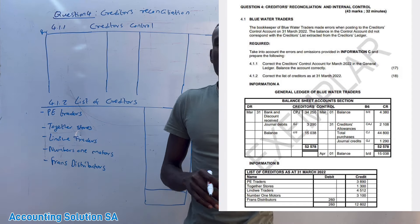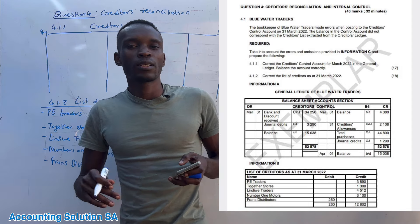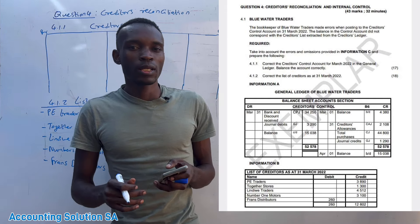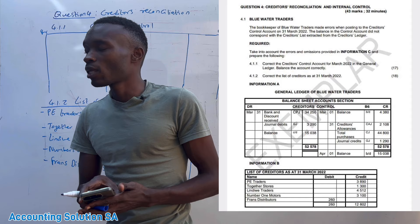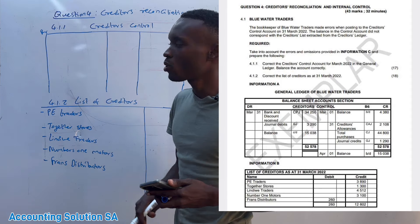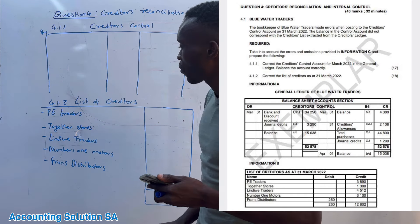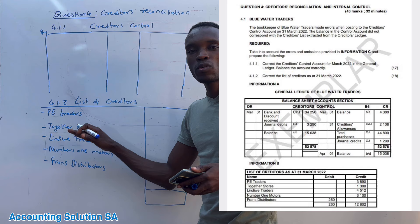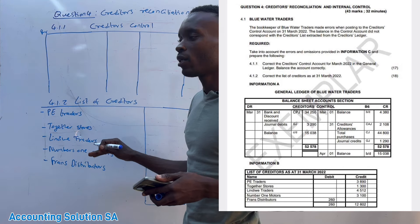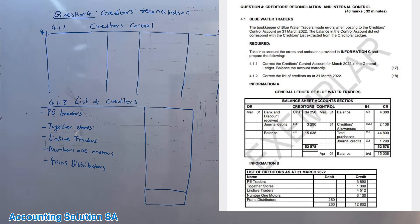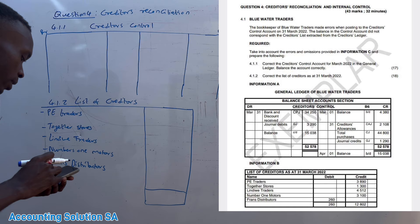In this video we are going to do a creditors reconciliation statement. We are reconciling the books of our supplier together with the books of the business. We will have what we call a creditors control, which is a ledger account, and we will have a list of creditors. The list of creditors contains our suppliers one by one, and the creditors control contains all the totals of those suppliers.